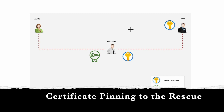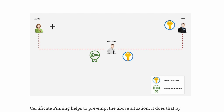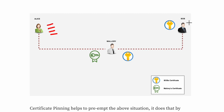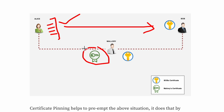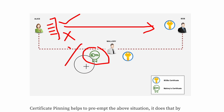How can we preempt this problem? We can prevent it if Alice already has Bob's public key stored on her side. Alice maintains a list of public keys she trusts — a pinned list. When she communicates with Bob and receives a public key in response, she checks it against her pinned list. If the key matches, the connection proceeds. But if Mallory intercepts and sends his own key, Alice will see it is not in her pinned list, causing a mismatch, and the connection will be rejected.